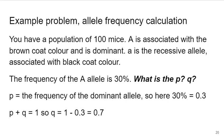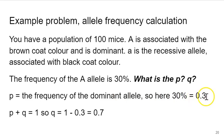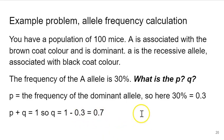Let's look at an example problem. Say you have a population of 100 mice where big A is associated with brown coat color and is dominant, and little a is the recessive allele associated with black coat color. The frequency of the big A allele is 30%, so P equals 0.3. Using P plus Q equals 1, Q must equal 1 minus 0.3, which equals 0.7. Check: 0.3 plus 0.7 equals 1.